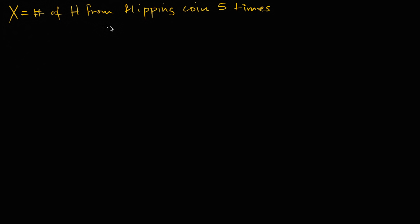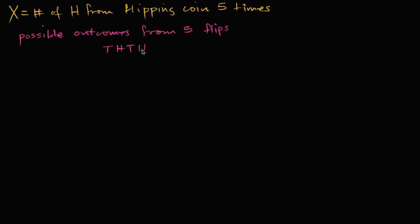Let's write out the possible outcomes from five flips. These are literally the number of possible outcomes for flipping a coin five times. For example, one possible outcome could be tails, heads, tails, heads, tails. Another possible outcome could be heads, heads, heads, tails, tails. Each of these is one of the equally likely outcomes.